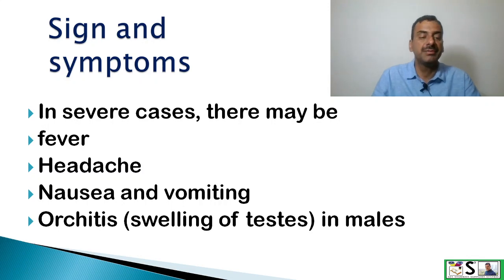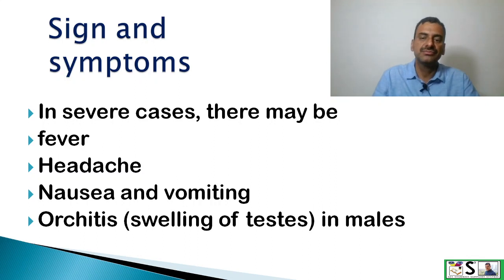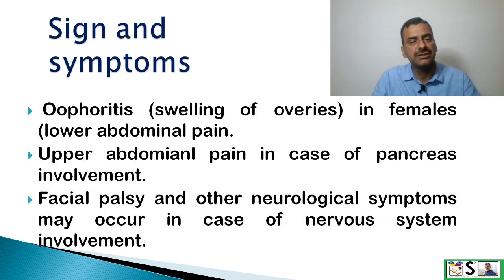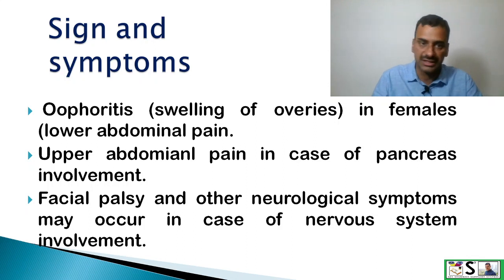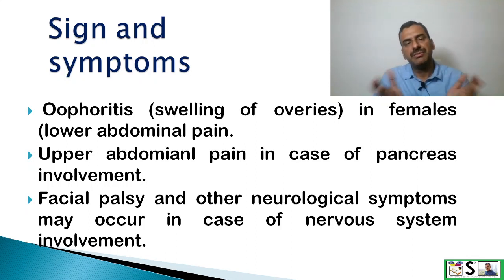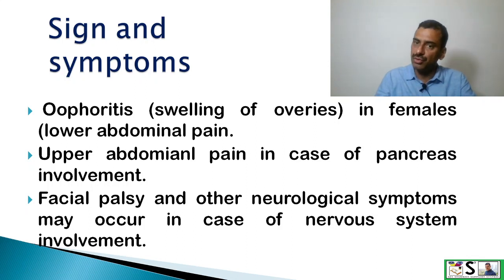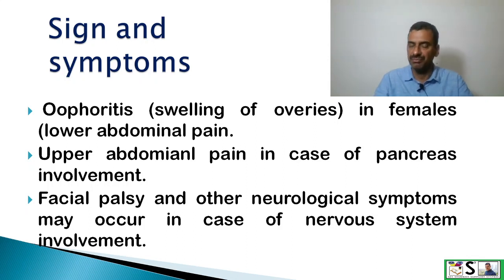In severe cases, there may be fever, headache, nausea and vomiting — generalized symptoms — and orchitis. Orchitis is the swelling of the testes in males. Oophoritis means inflammation of the ovaries in females, where there will be lower abdominal pain. There may be upper abdominal pain when the pancreas is involved. Facial palsy and other neurological symptoms may occur in cases of nervous system involvement.